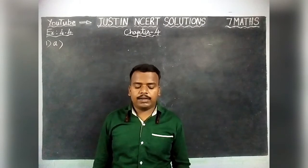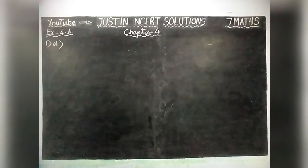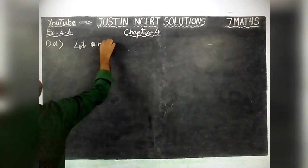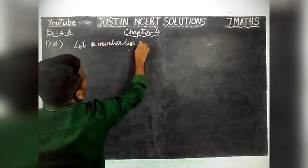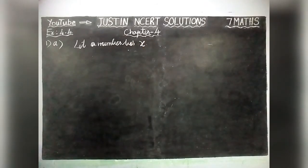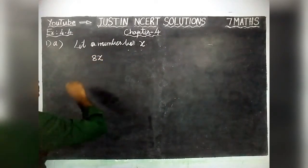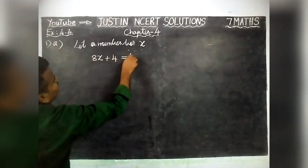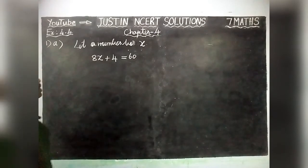Part A: Add 4 to 8 times a number, you get 60. We are going to form an equation from the given statement and then solve it. Let the unknown number be X. The condition is: 8 times a number means 8 into X, so 8X plus 4 is equal to 60.